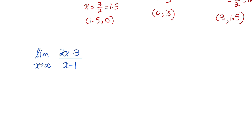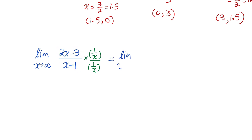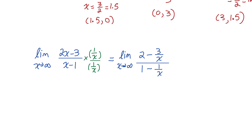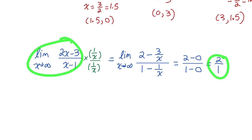To calculate this limit, we can divide all terms by the highest power of x in the denominator. Algebraically, we multiply top and bottom by one over x, which divides all terms by x. Doing that, this becomes the limit as x goes to infinity of: (2x/x - 3/x) over (x/x - 1/x), which simplifies to (2 - 3/x) over (1 - 1/x). As x goes to infinity, both 3/x and 1/x approach zero. So the limit equals two minus zero over one minus zero, which is two over one — confirming the horizontal asymptote is at y equals two.